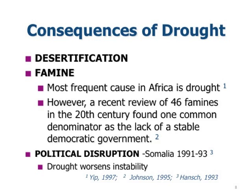Consequences of drought include desertification, famine, and drought is closely associated with political disruption, especially in Africa.